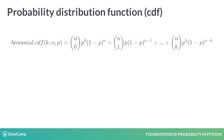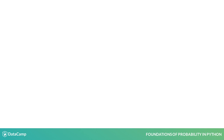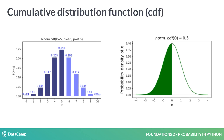If you instead want to calculate the probability of getting k or fewer heads from n throws, you use the binomial probability distribution function, which adds the probability of getting 0 heads out of n flips, getting heads once out of n flips, and getting all the way up to k heads out of n flips. The binomial cumulative distribution function allows us to calculate the cumulative probability of getting k heads or fewer from n coin flips with p probability of getting heads.